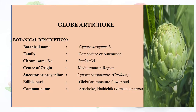Now we are going to discuss about globe artichoke. Its botanical name is Cynara scolymus Linnaeus, family Compositae or Asteraceae, chromosome number 2n = 2x = 34, and the center of origin is the Mediterranean region.